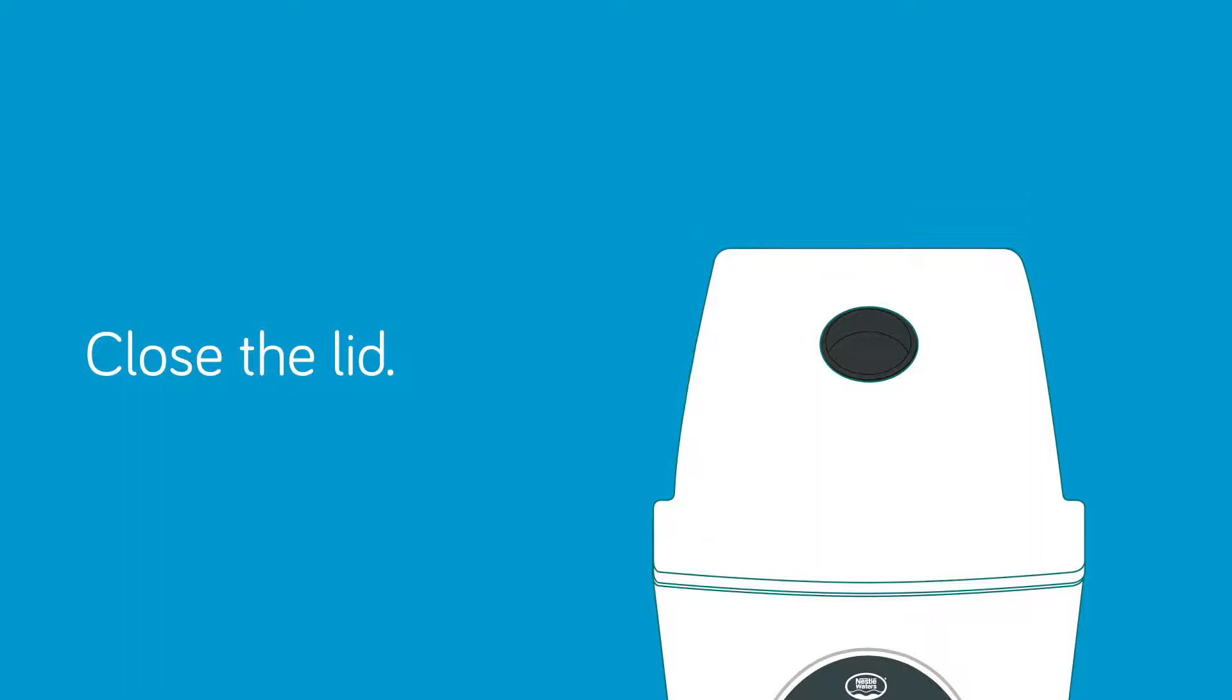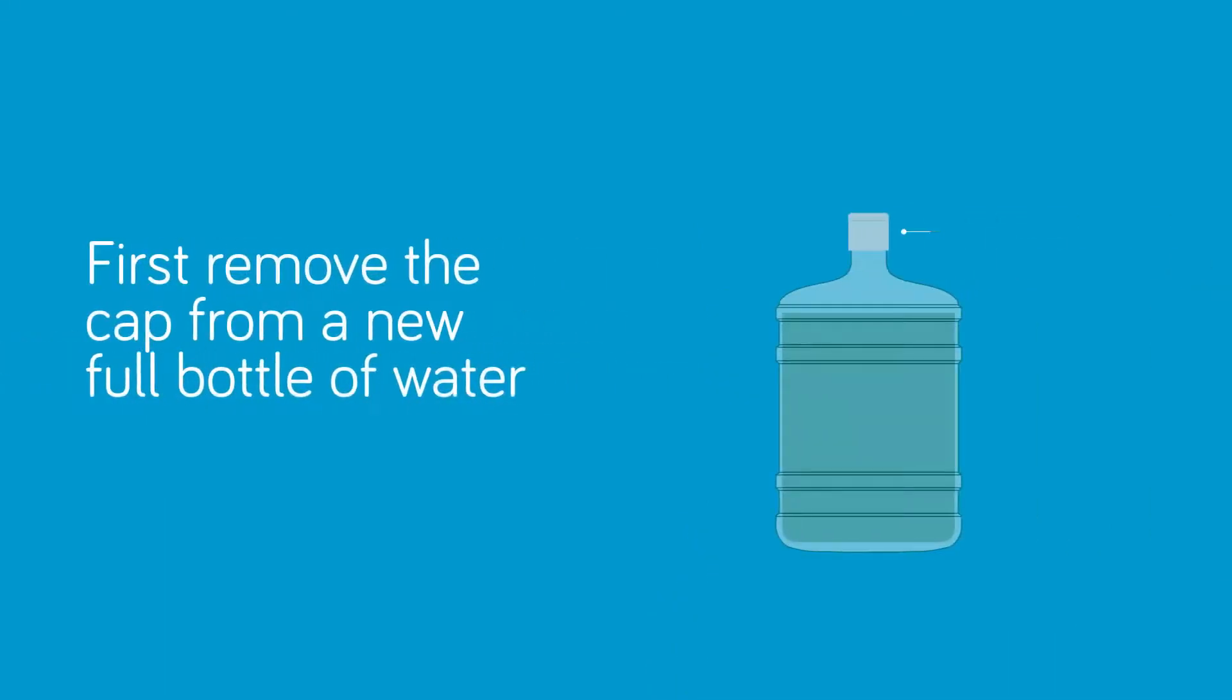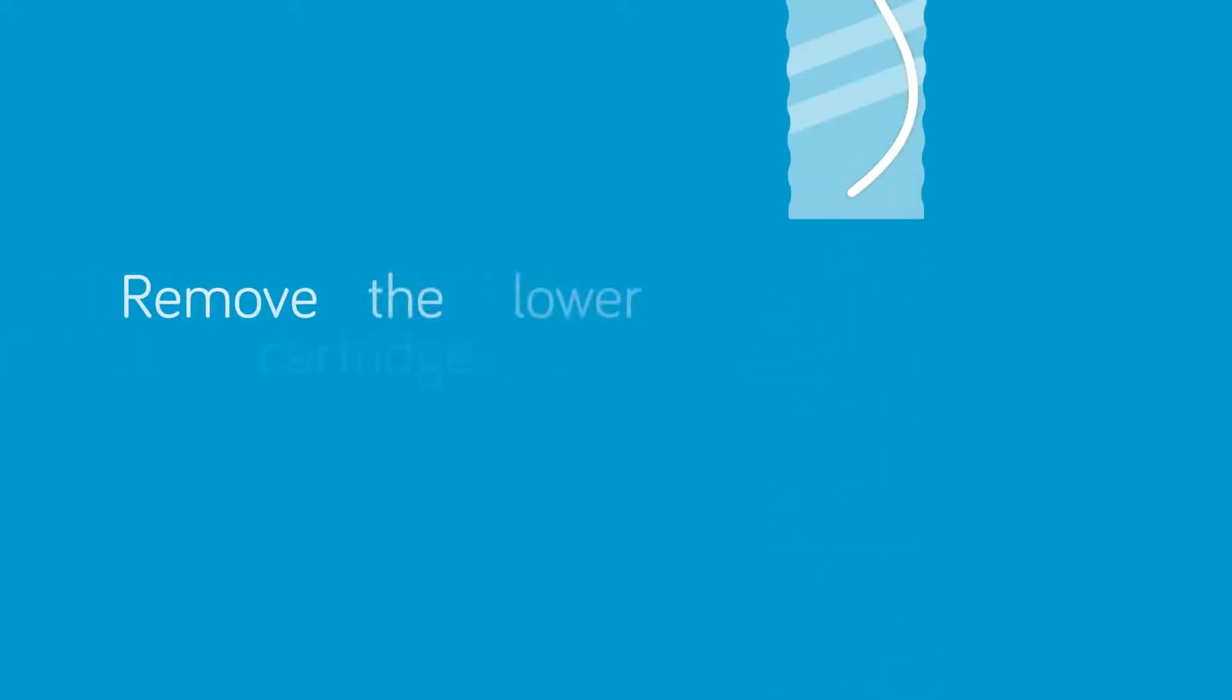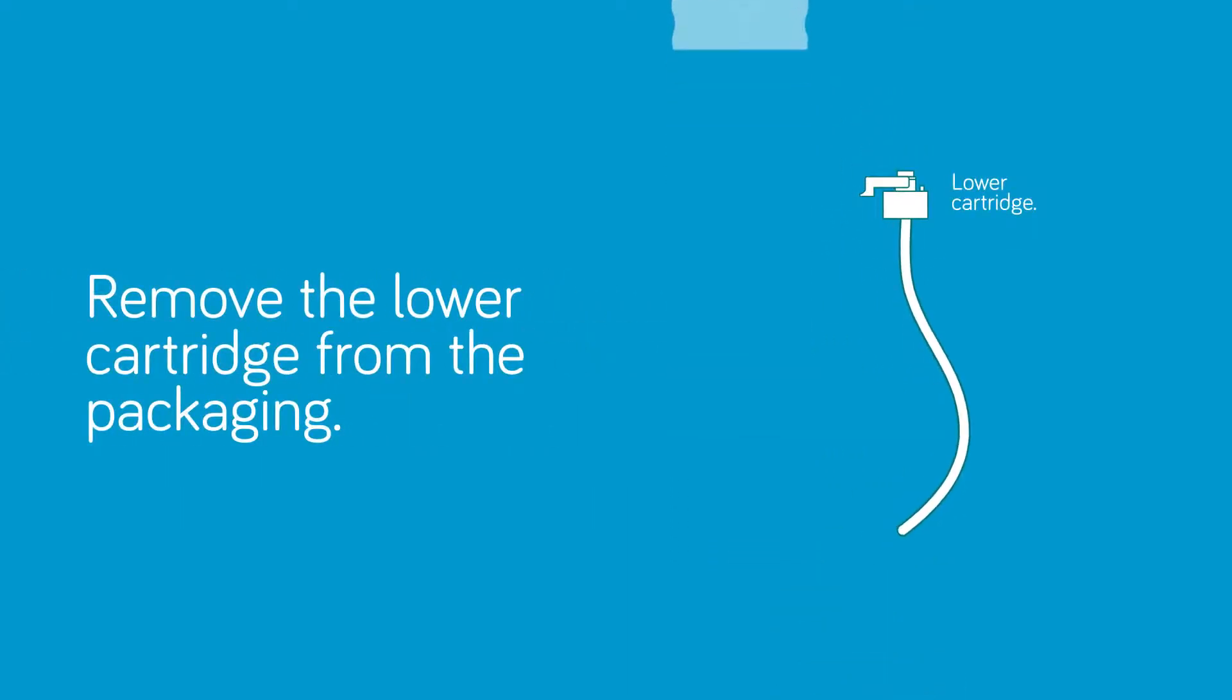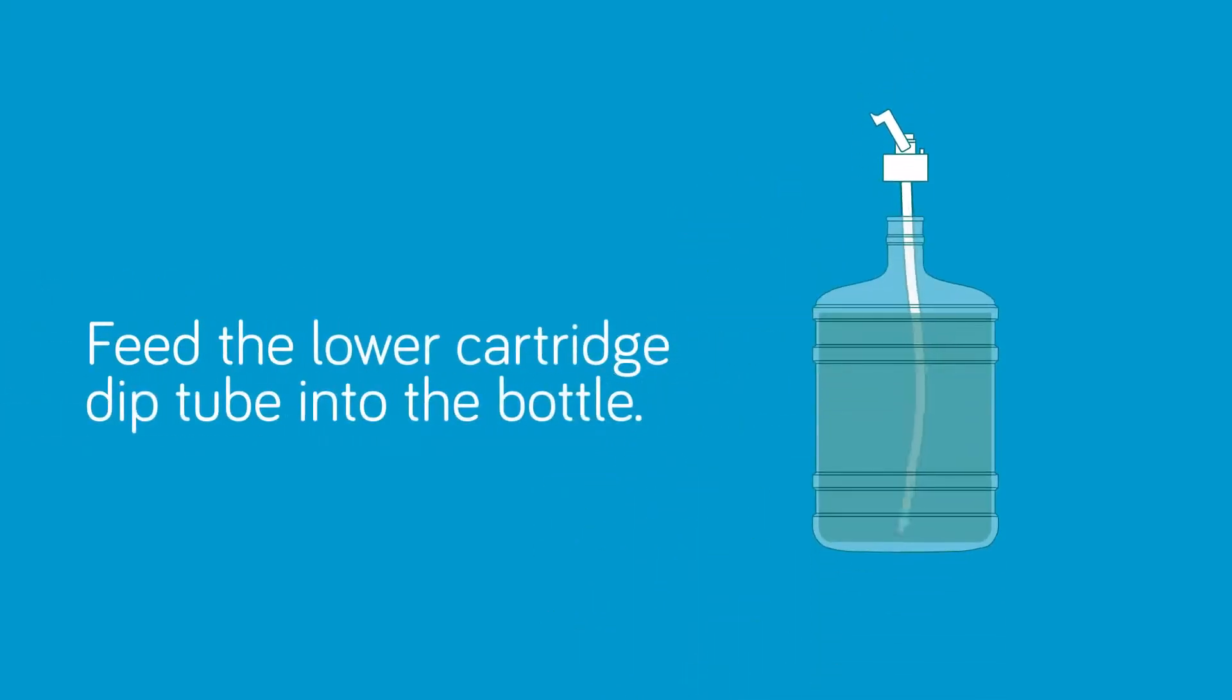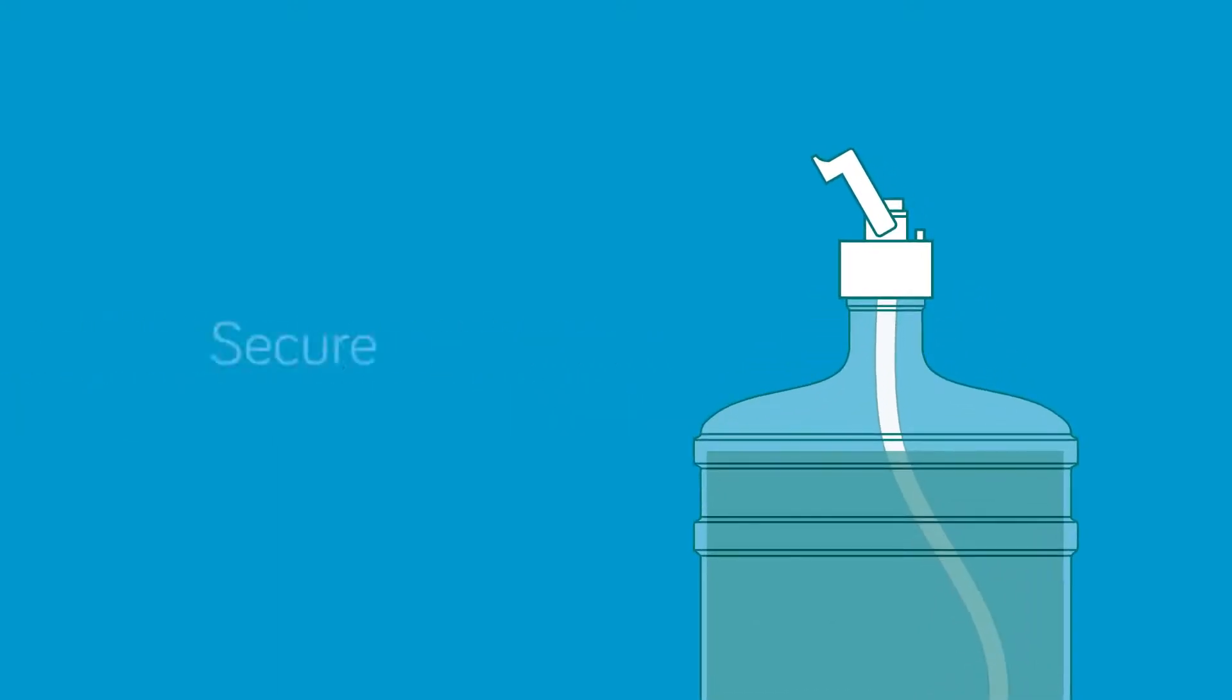You are almost done. Remove the entire cap from a new bottle of water and wipe down the neck with a clean cloth. Remove the lower cartridge from the packaging and put on the supplied gloves. Now carefully feed the lower cartridge dip tube into the bottle and secure the lower cartridge cap onto the bottle opening.